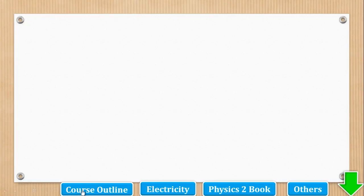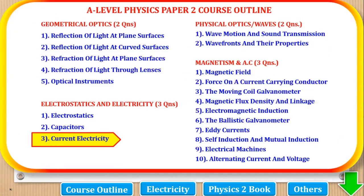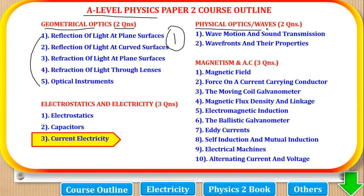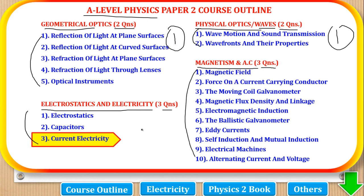Before we proceed, let's first look at the syllabus outline for this paper. Physics paper 2 is divided into 4 parts. The first part is geometrical optics, where 2 questions come and a student must answer 1. The second part is physical optics or waves, where 2 questions come and a student must answer 1. The third part is electrostatics and electricity, where 3 questions come. The fourth part is magnetism and alternating current, where 3 questions come. You can choose to answer 2 from here and 1 from there, or 1 from here and 2 from there, to make a total of 5.